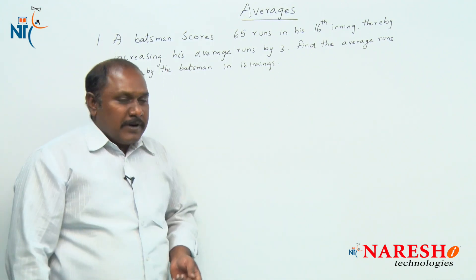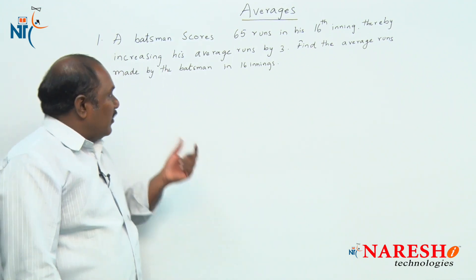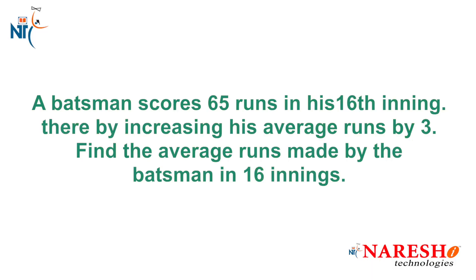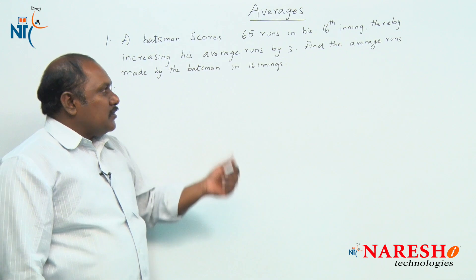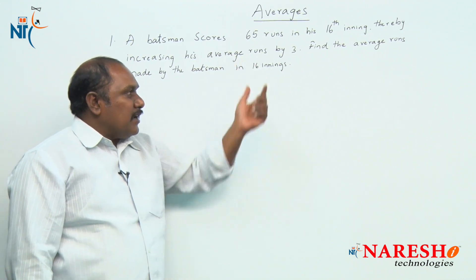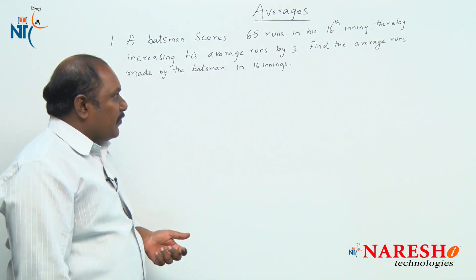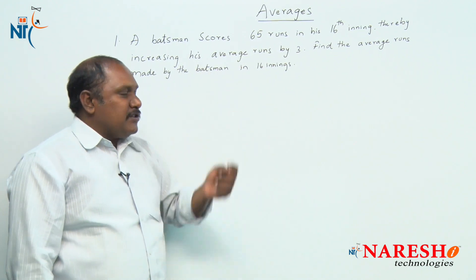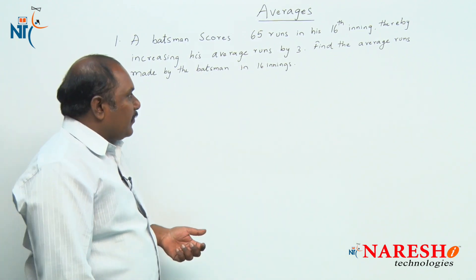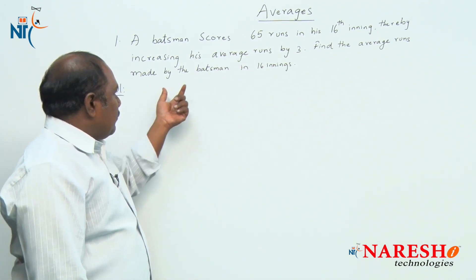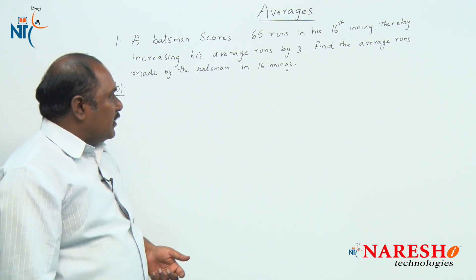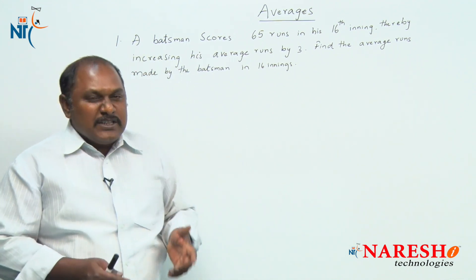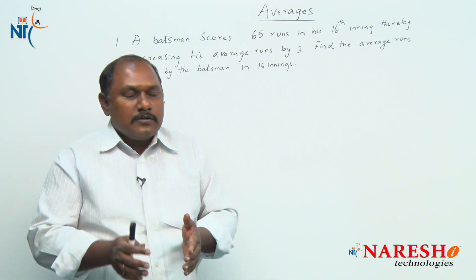Let us see how to solve this particular problem. The first question: a batsman scores 65 runs in his 16th inning, thereby increasing his average runs by 3. Find the average runs made by the batsman in 16 innings. Here in this question we need to assume that in all the innings he is out.